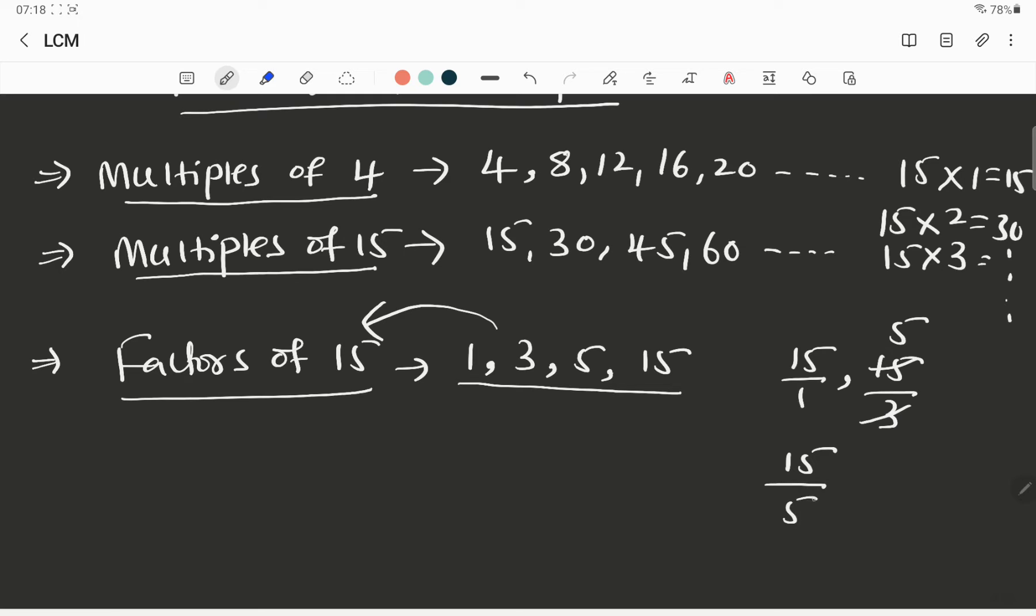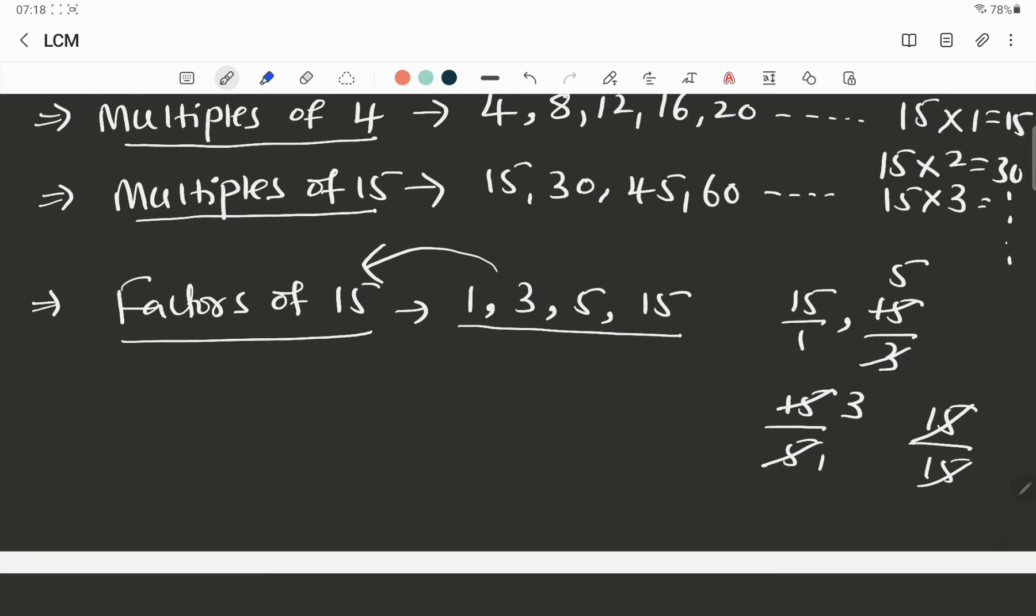And 15 divided by 5, if you do 5 ones are, 5 threes are. And 15 divided by 15, you are doing, they will get cancelled. So factors means the numbers which are going to divide the given number completely.